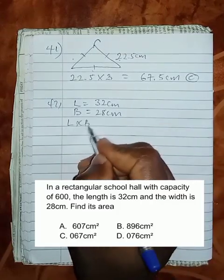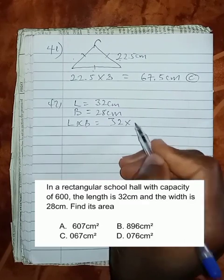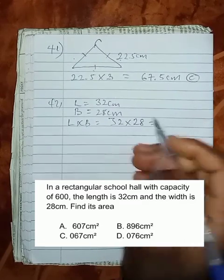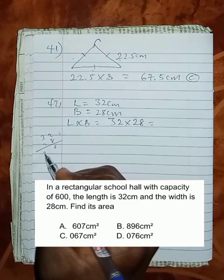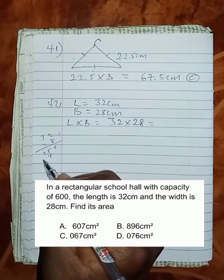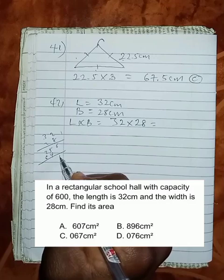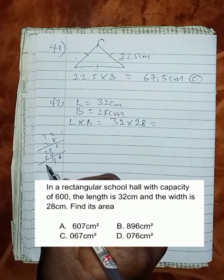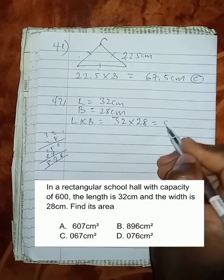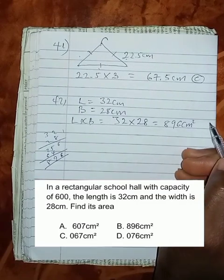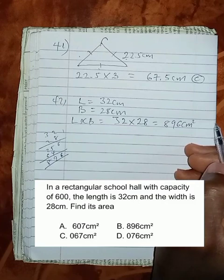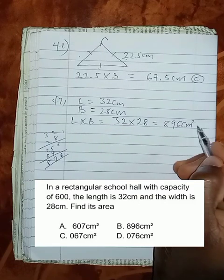The area must be length times breadth, which gives us 32 cm multiplied by 28 cm. When we multiply this, we have 896 cm squared as the area of the rectangular hall, which is B.